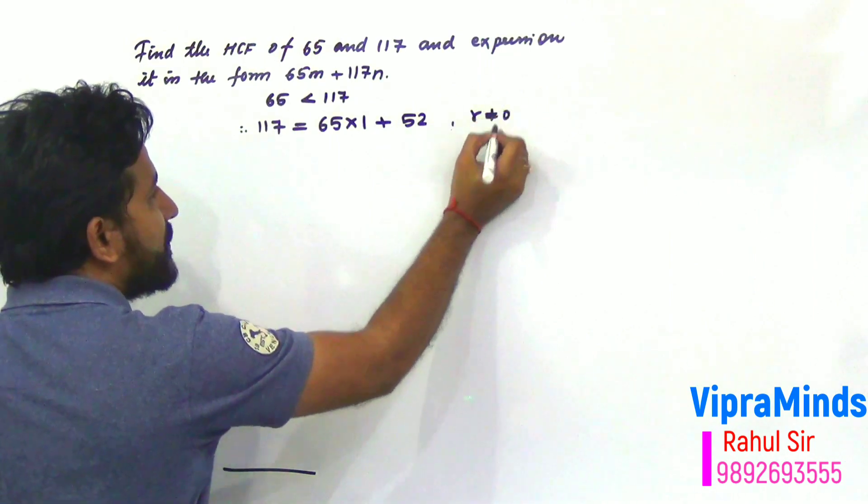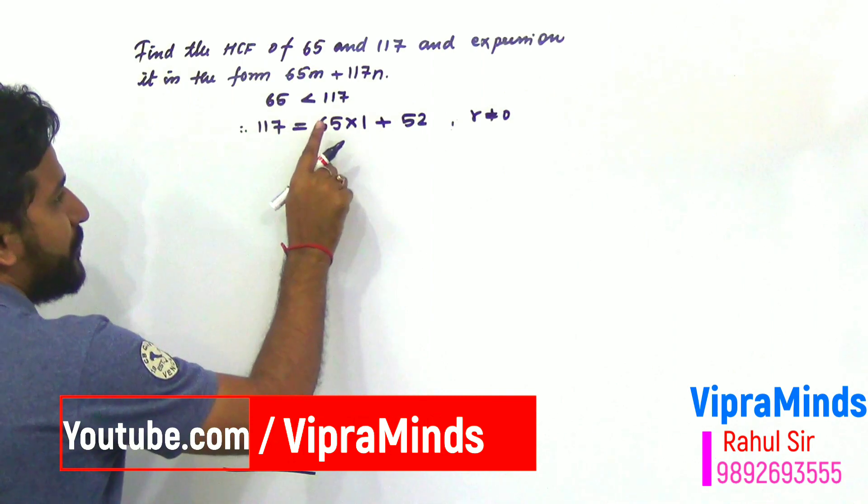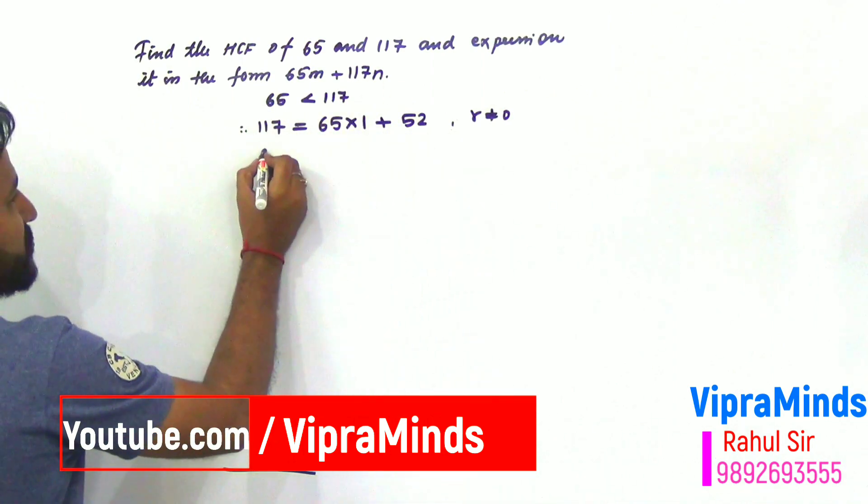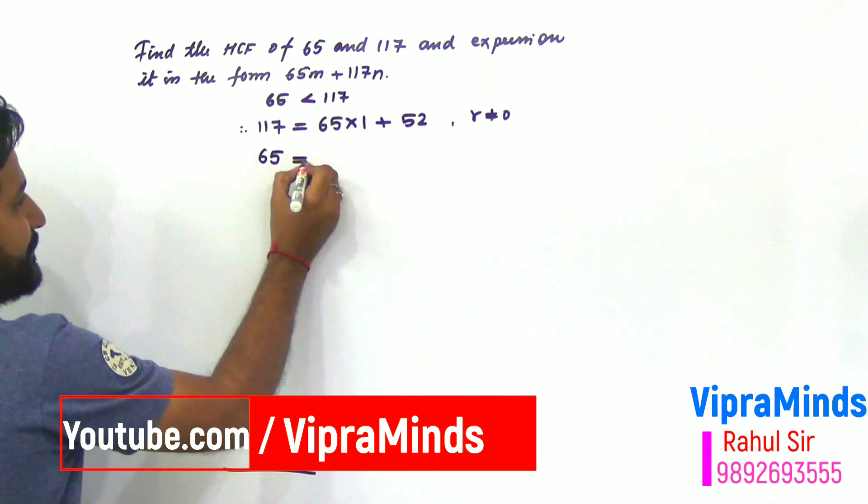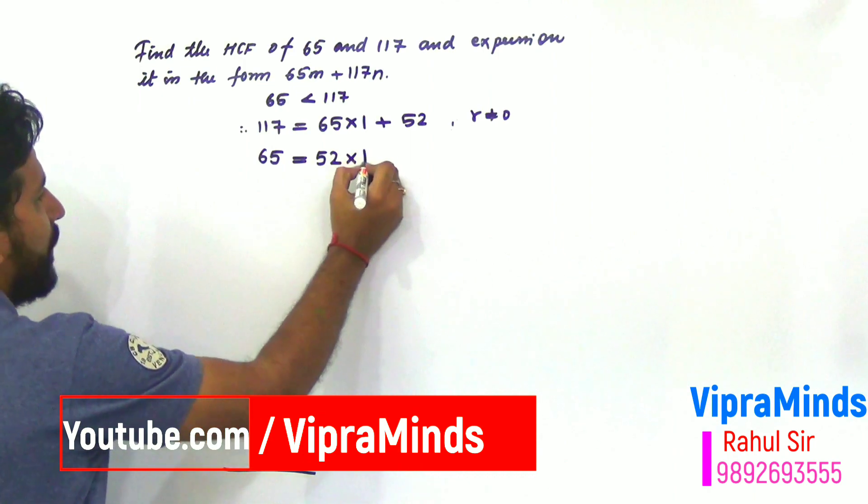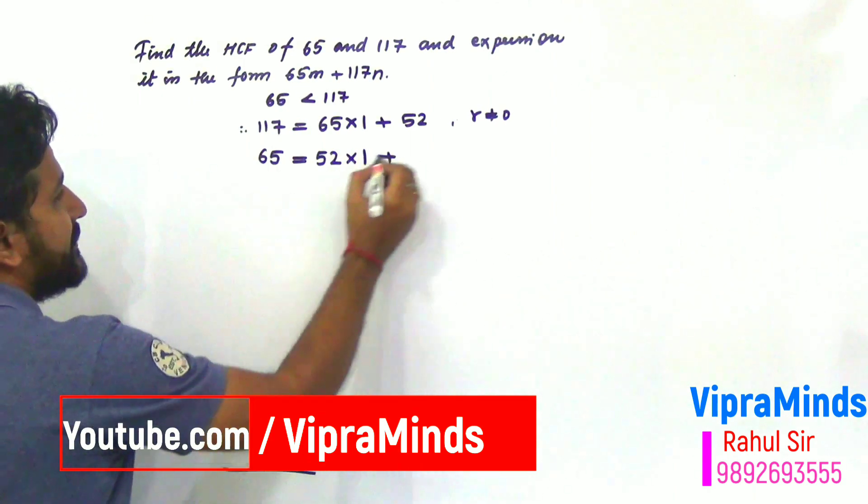So, the remainder is not equal to 0. Next step, what to do? The divisor and the remainder, whichever is greater. So, 65 is greater, we'll make it dividend. Now, the divisor will be 52. So, 52 into 1, 52 remainder is 13.